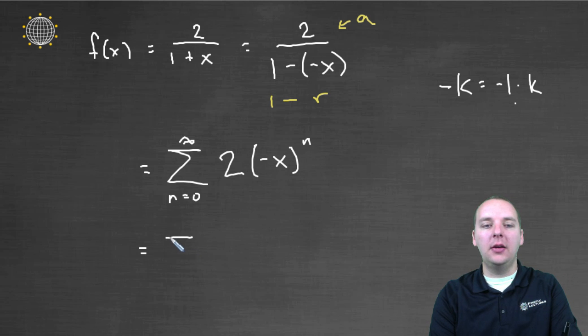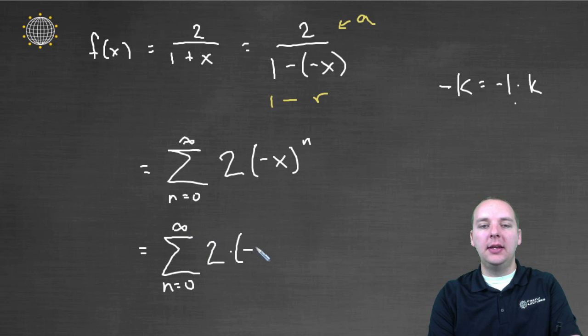So a good final answer would be the sum n equals zero to infinity two times negative one to the n power times x to the n power.